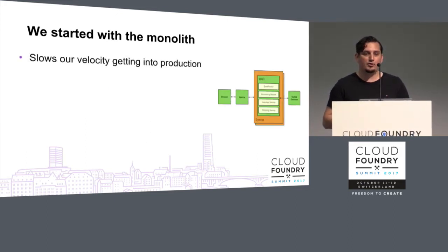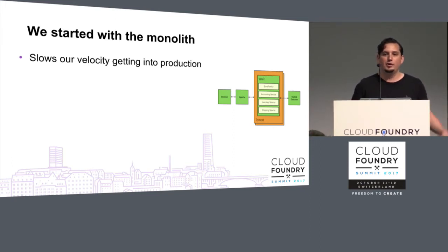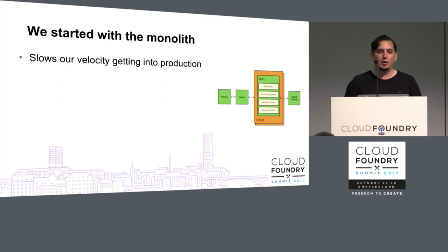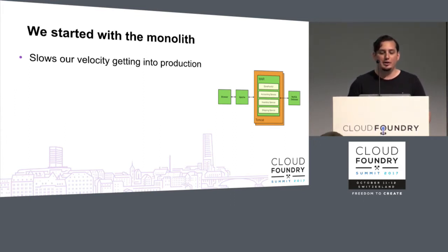It's going to slow our velocity getting into production. If we have to share that release schedule, share that source code, share that infrastructure, it's really going to slow us down because we have to coordinate more. If something goes wrong — if one developer changes a line of code and that brings the entire application down in production — that's a big deal, and it's going to slow us down.